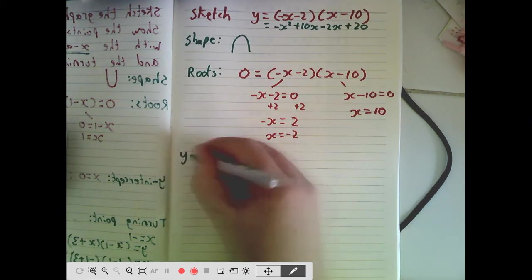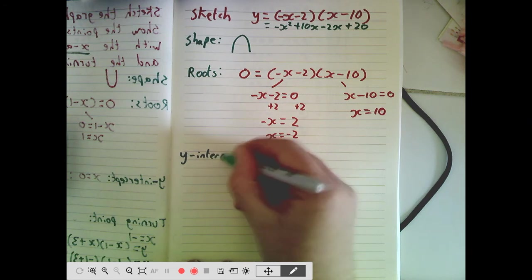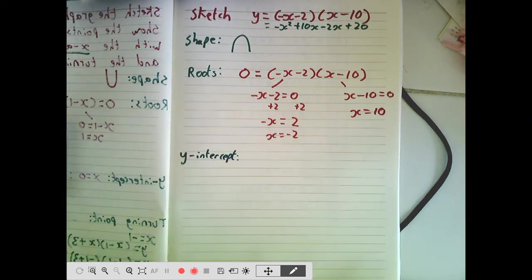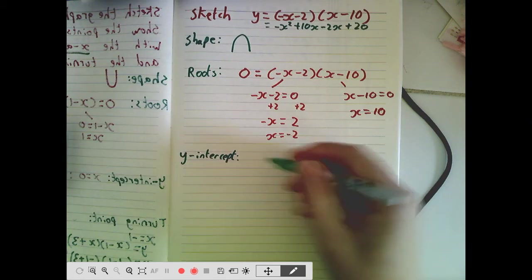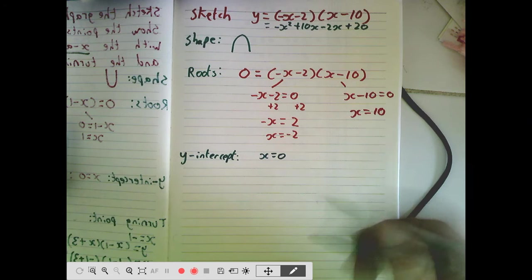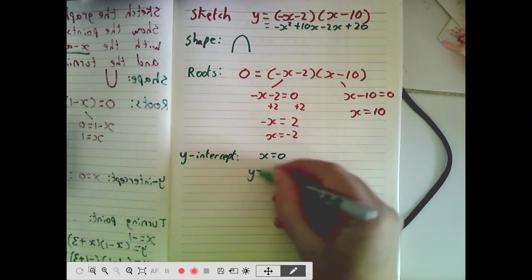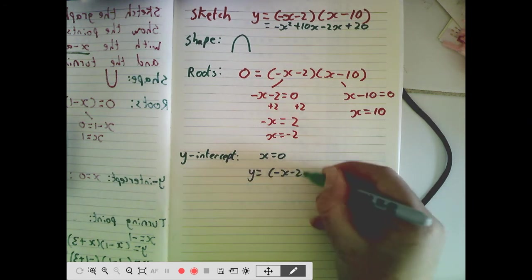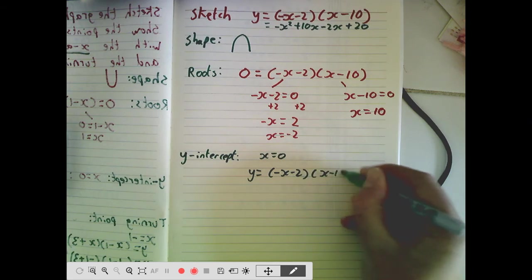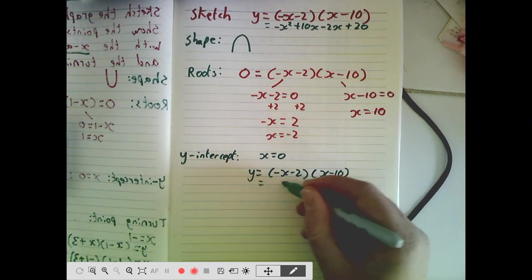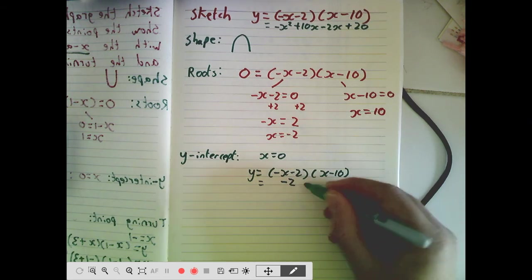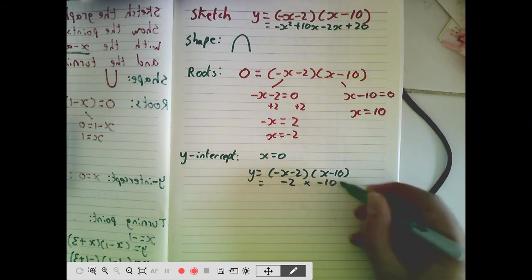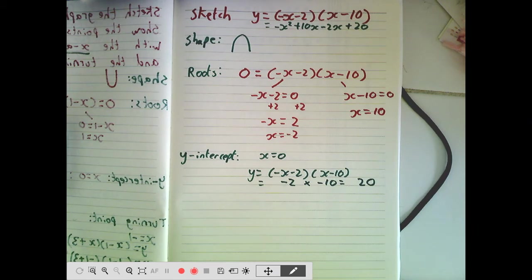What do we want to do next? We want to find the y-intercept. So again, this is where it crosses the y-axis. So we've got the y-intercept here, and that is the point in which x equals 0. So this is the point where x equals 0. Let's work it out. y equals negative x minus 2, x minus 10. So if we set x to be 0, we're going to get minus 2, minus 0 take 2 is just minus 2, times minus 10. So that's going to be positive 20. So it crosses the y-axis at 20.